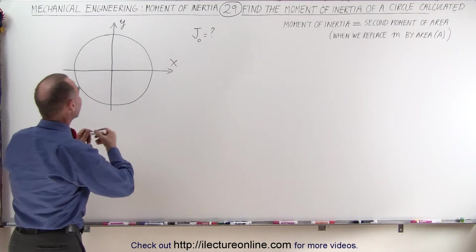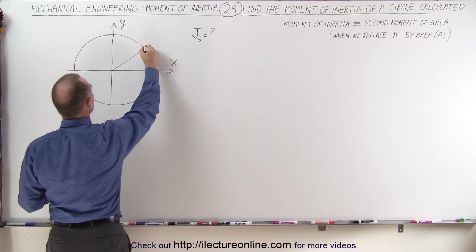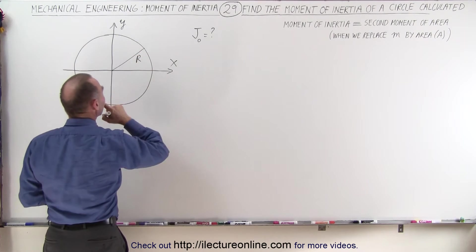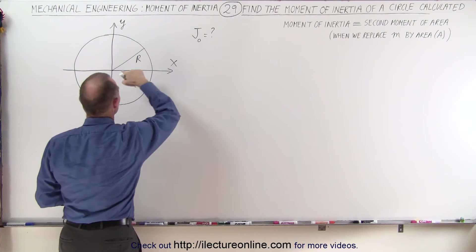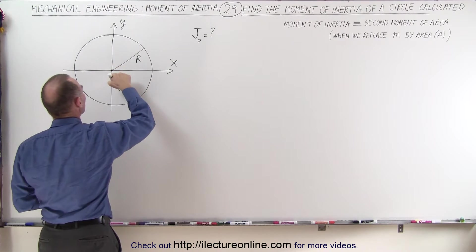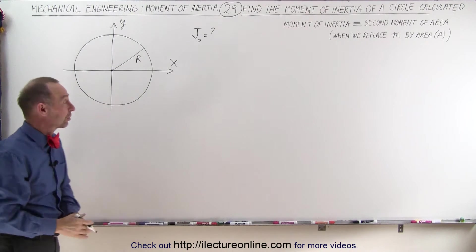So here we have a circle. It has radius r. And we want to find the moment of inertia relative to the origin. And notice that the origin is right at the center mass of the circle.